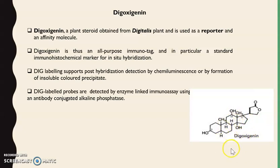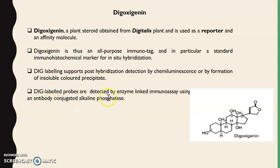Digoxigenin can act as both reporter and affinity molecule, and it can easily bind to any marker molecule. It can form an immunoassay using an antibody conjugate with alkaline phosphatase. DIG labeling supports post-hybridization detection by chemiluminescence or by formation of an insoluble colored precipitate, and it is an all-purpose immunohistochemical marker for in situ hybridization.